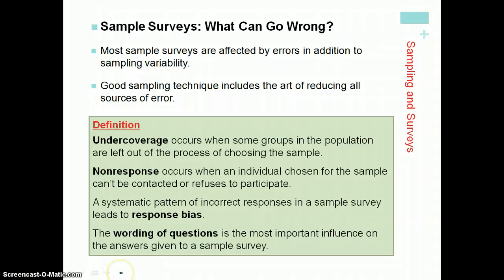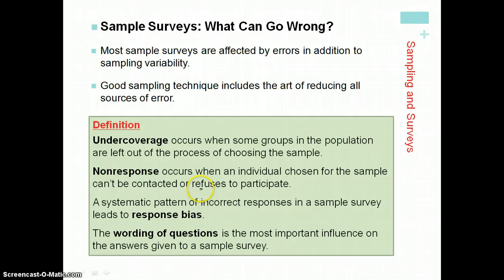What can go wrong with a sample survey? There's something called under-coverage bias, where a group might be left out — for example, in the census, homeless people are often left out because they're hard to find and count. Non-response occurs when an individual refuses to participate or cannot be contacted. People who choose not to participate may share a common characteristic, so you have to be careful about non-response.